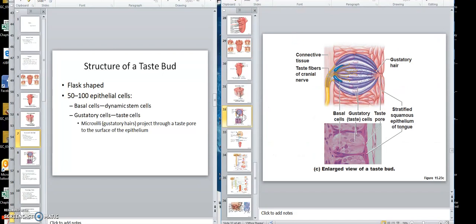It's almost like an ear of corn with a husk. What you got are these supporting cells right here. This will be like the husk. It's flask-shaped, 50 to 100 epithelial cells. The basal cells you have down there. There's a basal cell.